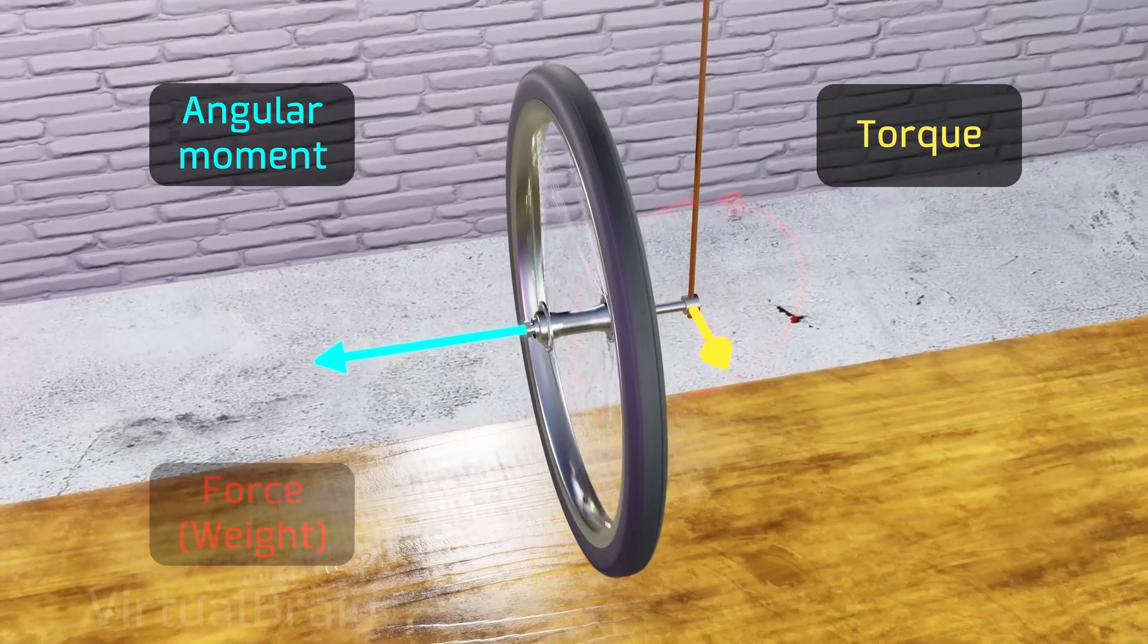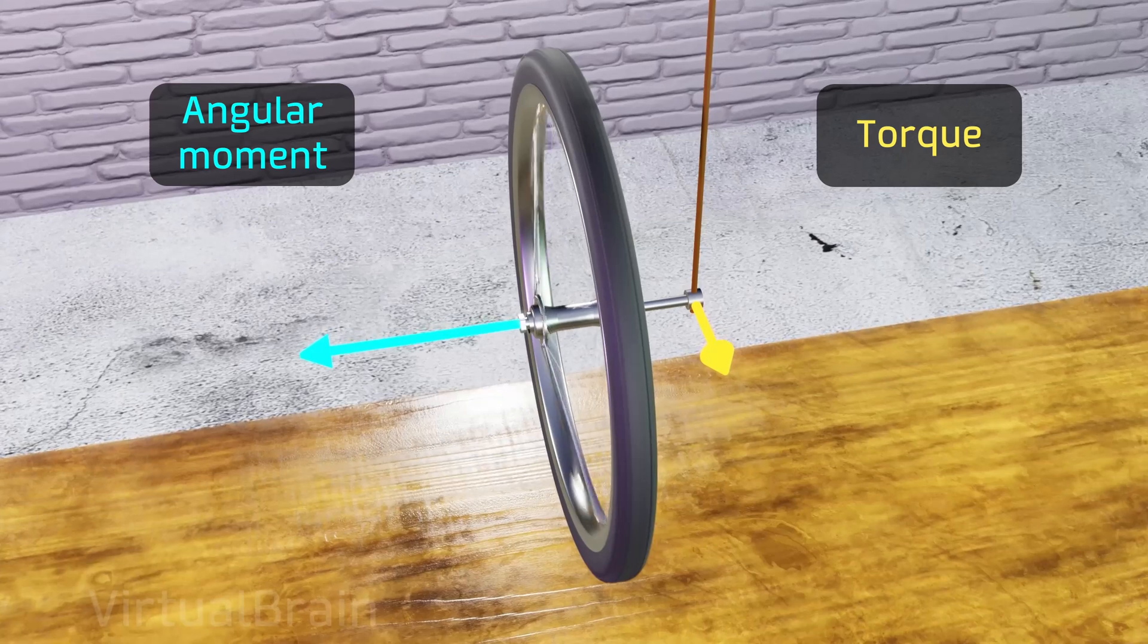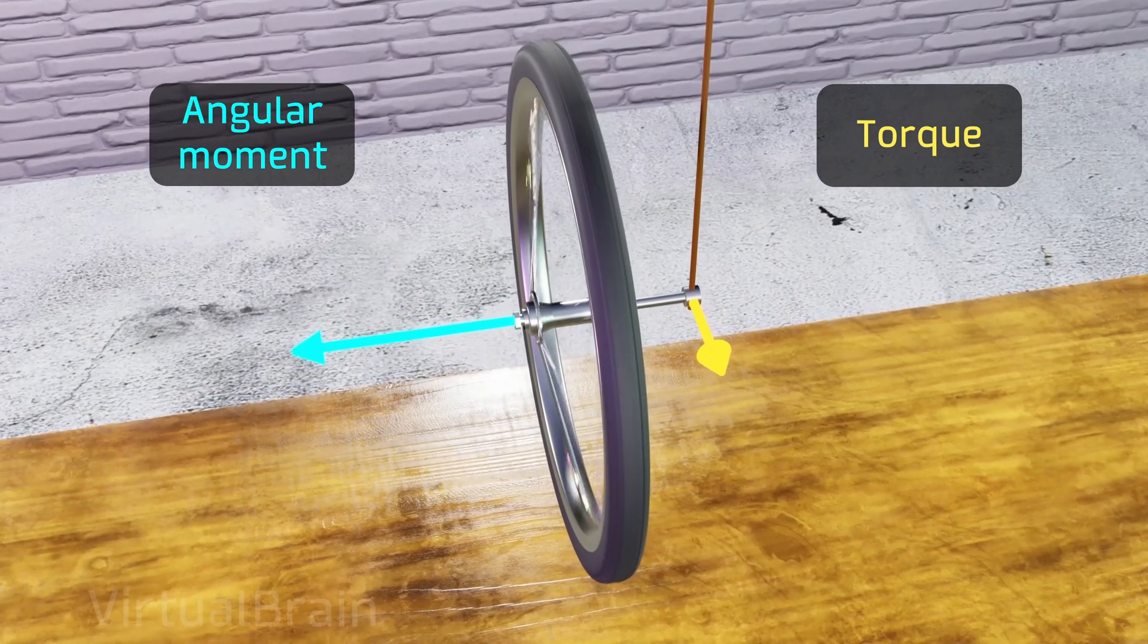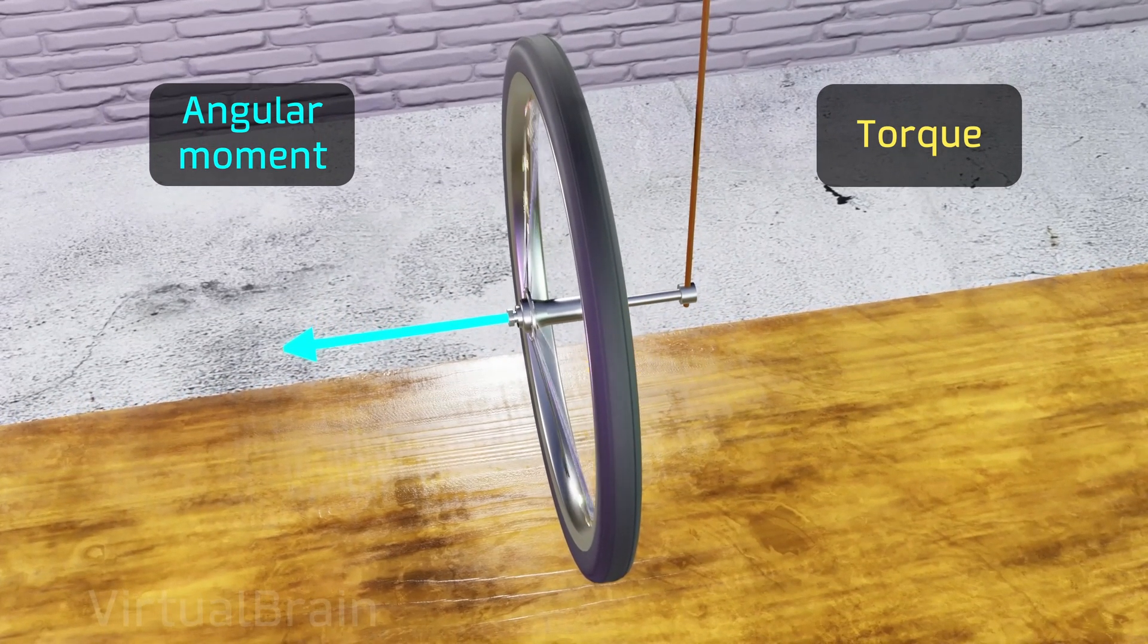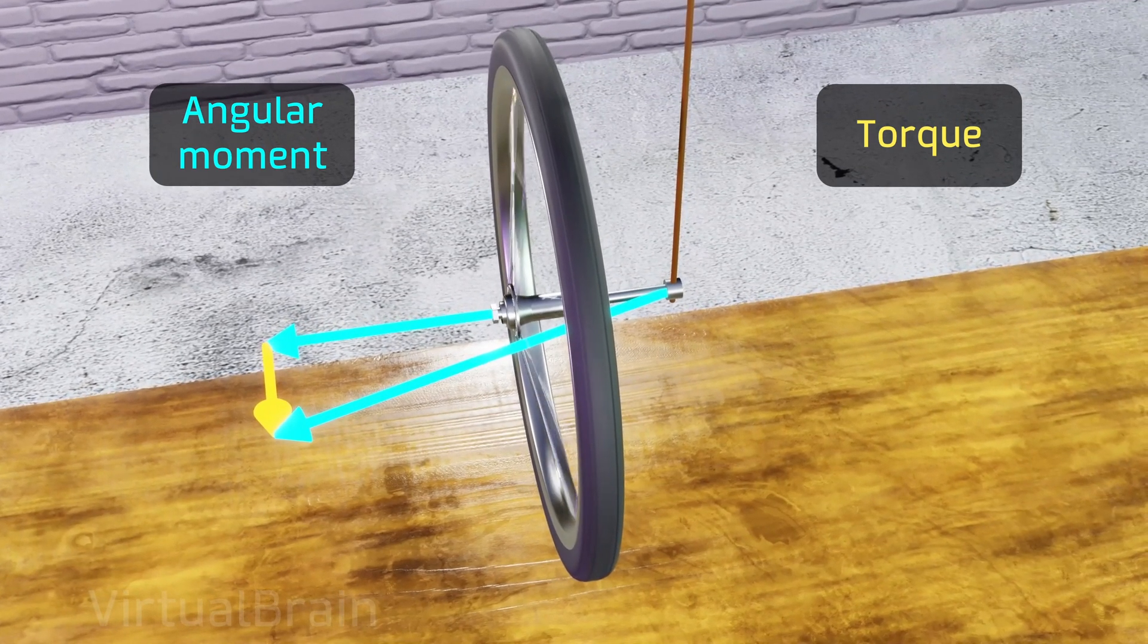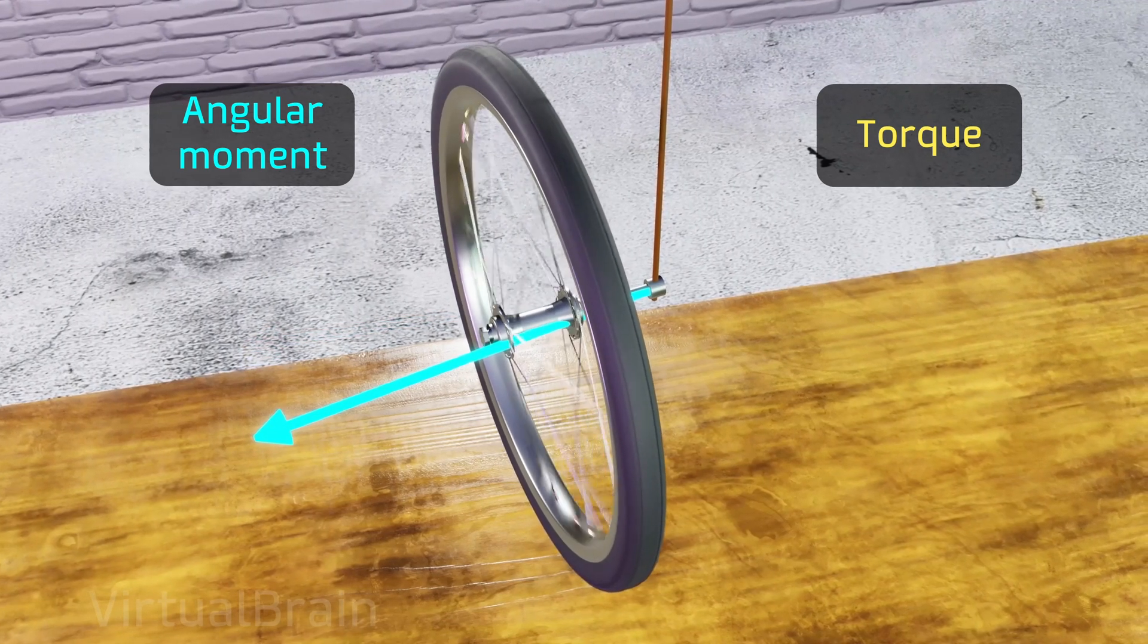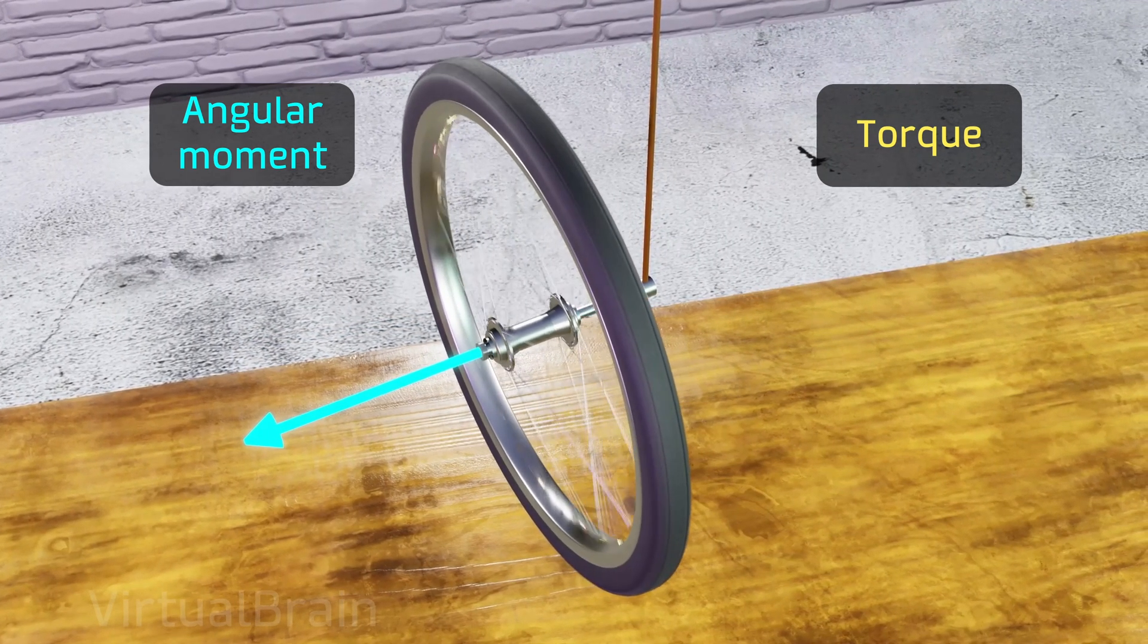However, according to the second law, the torque will generate a small change of angular momentum in its direction, which in this case has no vertical component. By adding the initial angular momentum with the small change due to the torque, the resulting angular momentum and thus the wheel's axis of rotation will have slightly changed its orientation horizontally without falling due to gravity.